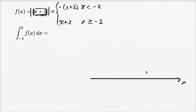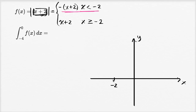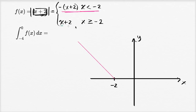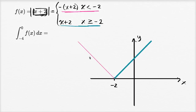Let me draw the absolute value function to make this clear. So that is my x-axis, that is my y-axis, and let's say we're here at negative two. When x is less than negative two, my graph is going to look like that. And when we are greater than negative two — I'll do that in a different color — it's going to look like that. So in blue we have the graph of y equals x plus two, and what we have in magenta right over here is the graph of negative x minus two. It has a negative slope and we intercept the y-axis at negative two.